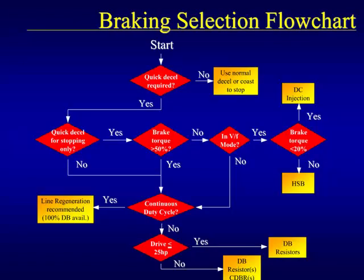Here is a flow chart that can be used as an aid when determining the appropriate type of braking method to use. This is a general recommendation and actual braking solutions depend on issues such as size constraints, complexity of the solution, acceptable heating, power quality, and cost. The appropriate braking solution is shown in yellow. Note that there are two dynamic braking solutions shown in the bottom right-hand corner. If the drive is less than or equal to 25 horsepower, only dynamic braking resistors are required. If the drive is over 25 horsepower, both resistors and transistor units are required.